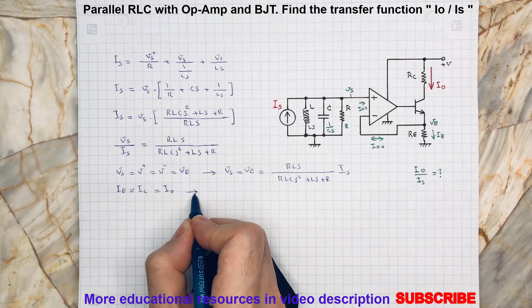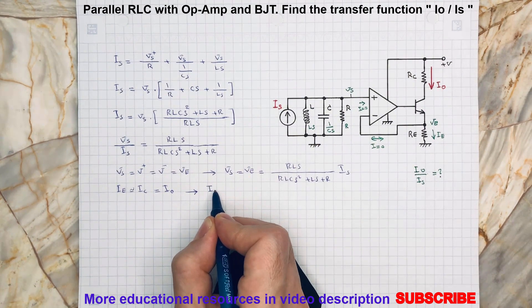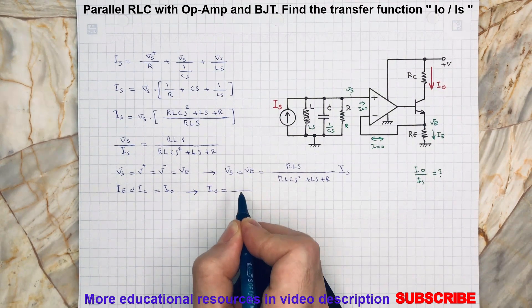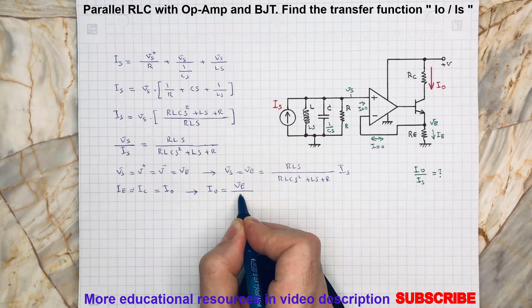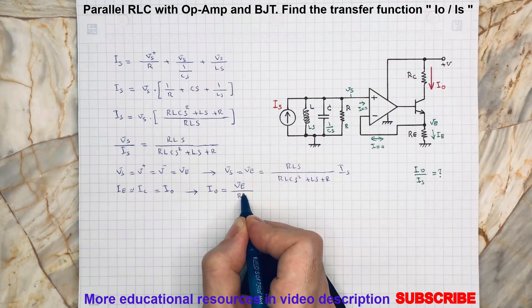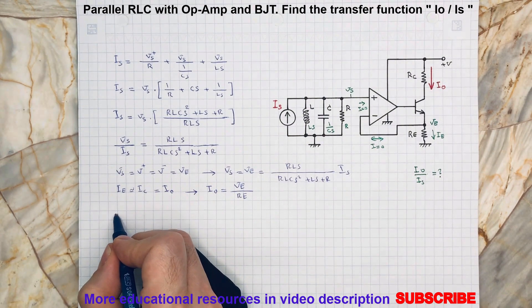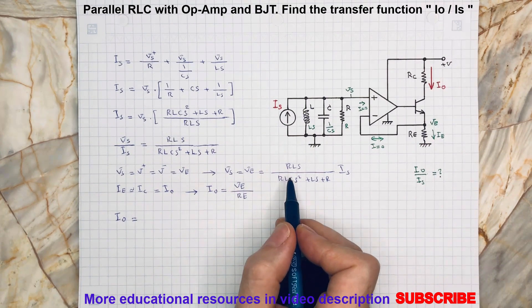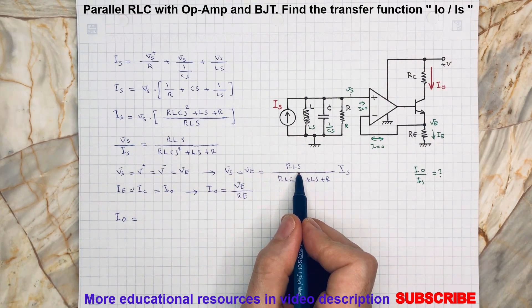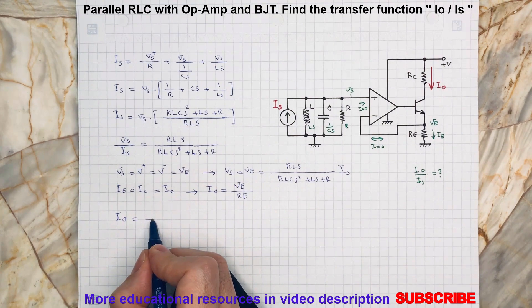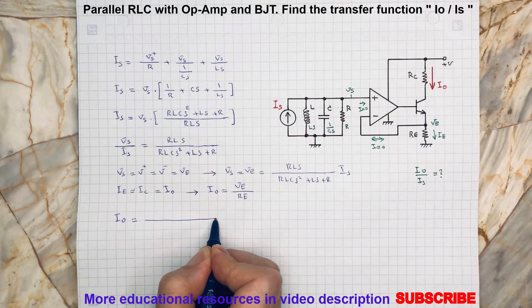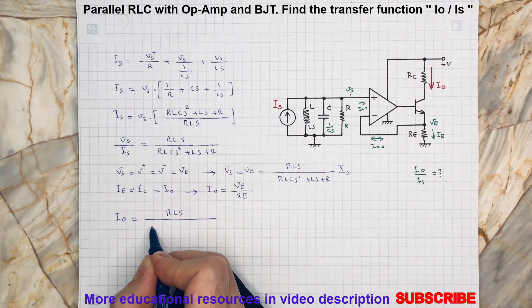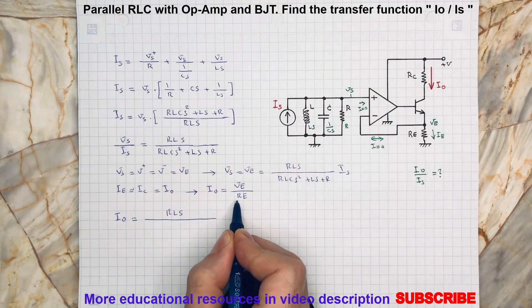And then with this result, rewriting everything here, IO is equal to... And now we already know that VE is equal to this expression. We have it here as well.